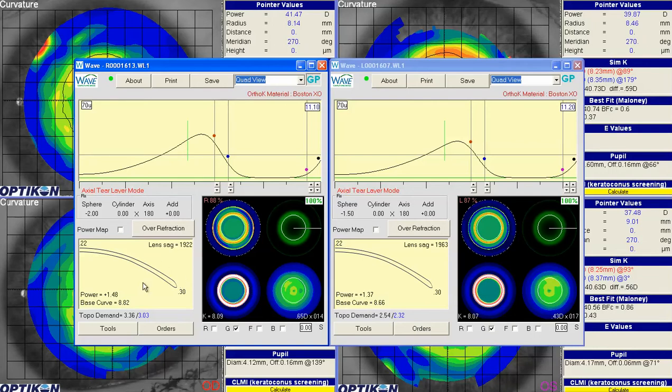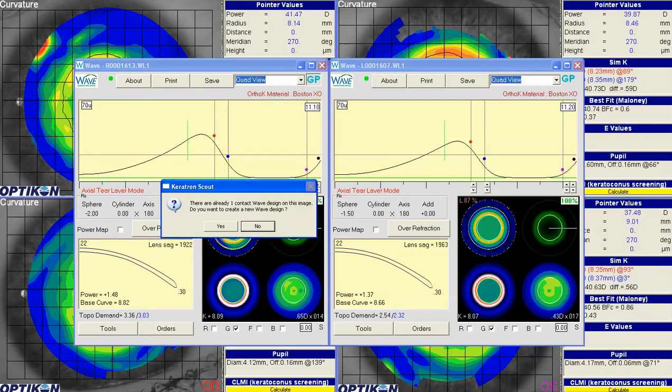So that said, we're at 11.1 diameter, 6, and 6.6, 1.48. So I'm going to go to the original topography that was used to design this lens for the right eye. I'm going to choose a new wave lens design. And I won't create a new lens.